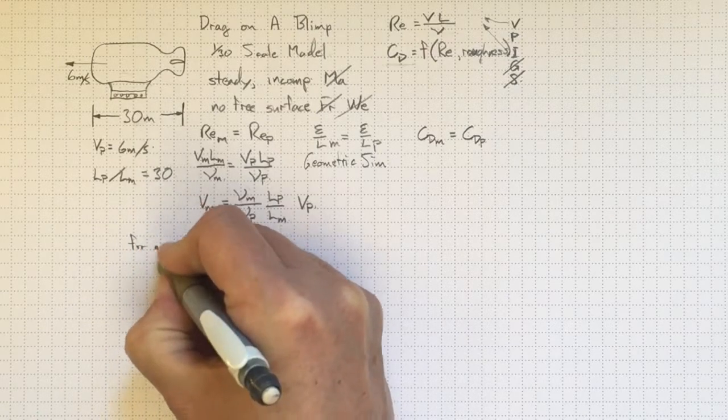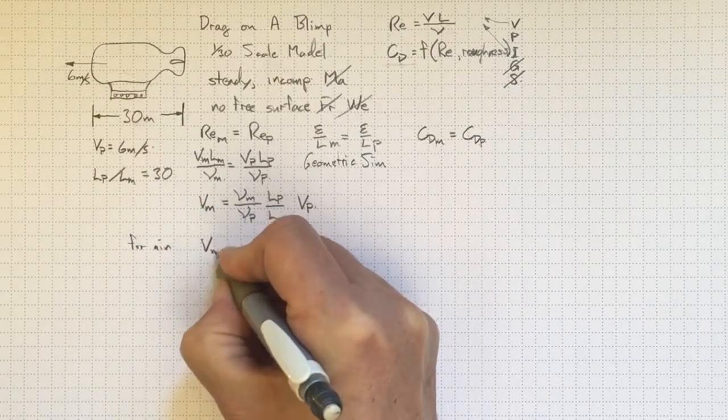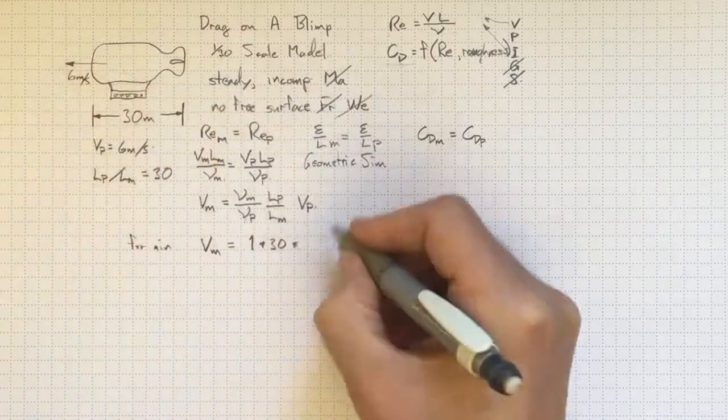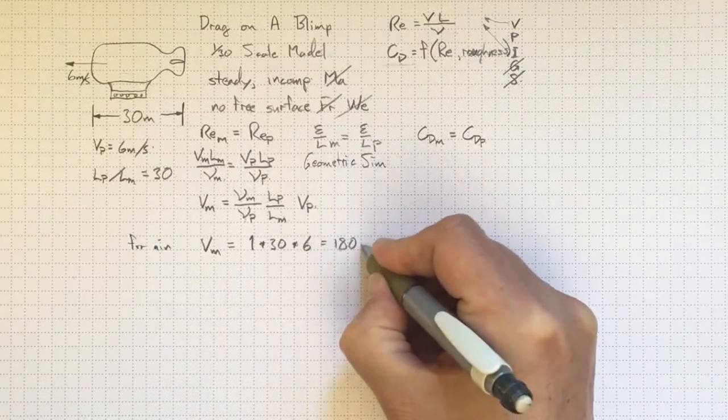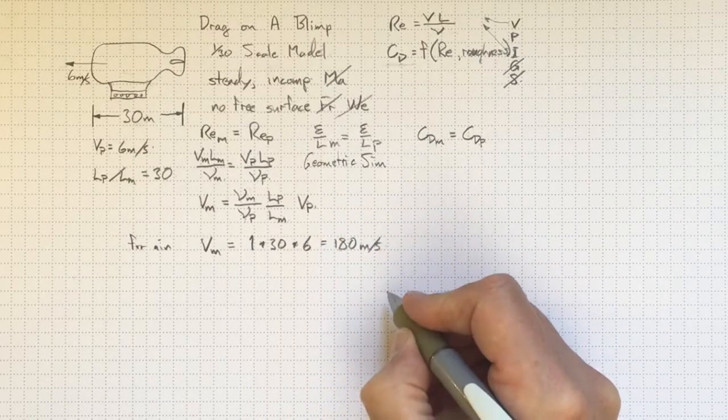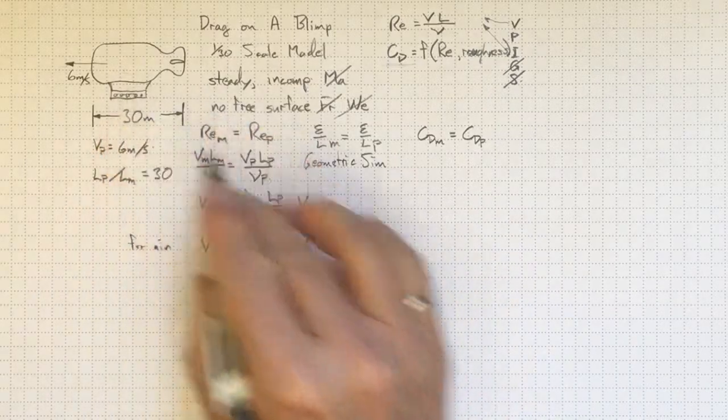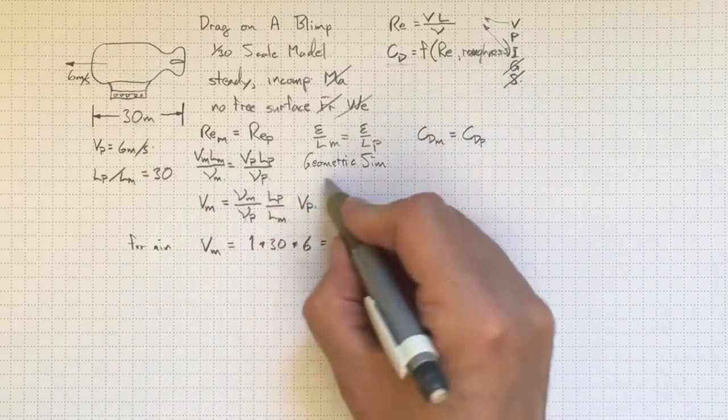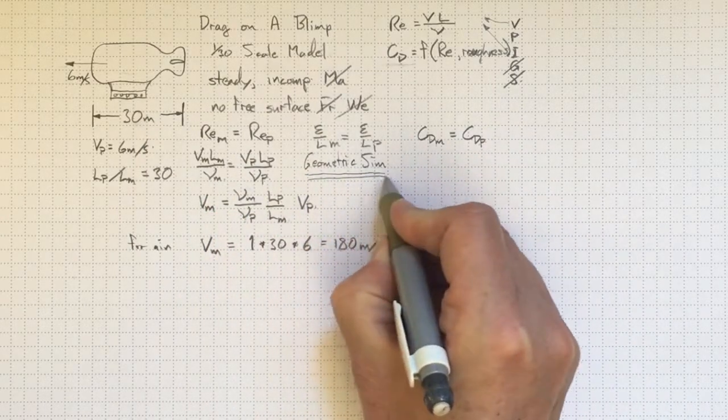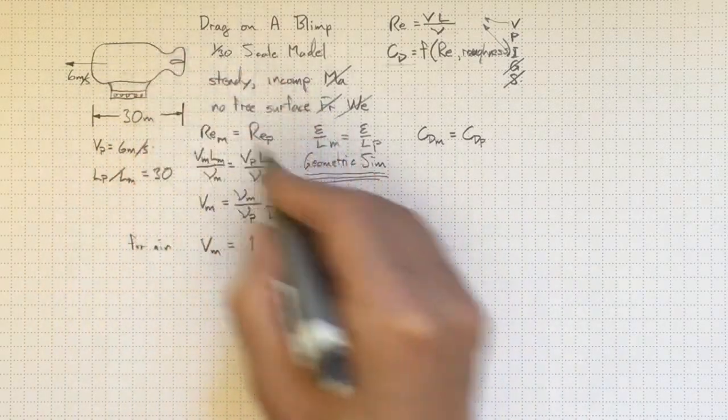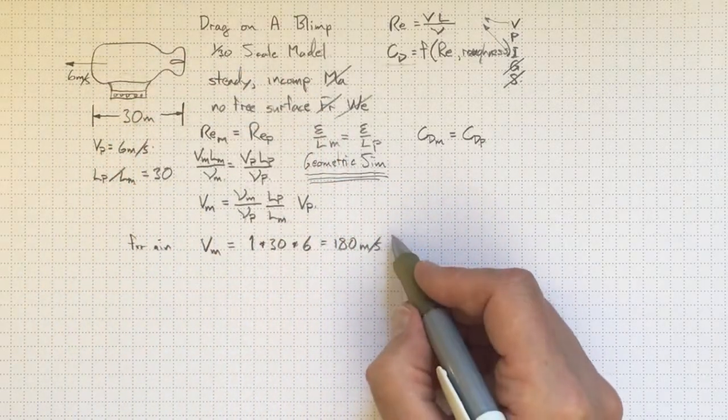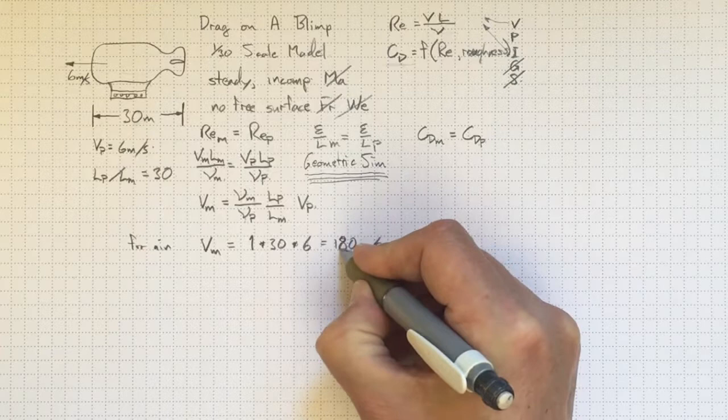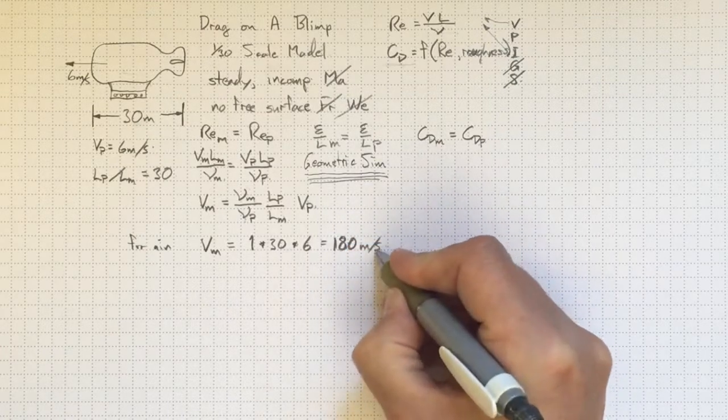So, for a test in air, the model velocity would have to be equal to 1 times 30 times 6, which is 180 meters per second. And I would be able to get the same behavior around my small model as I had around the really large one because I'd have the same Reynolds number. And if I had geometric similarity, then I'd have the same ratio of all of the lengths. It would be the same size and shape right down to the roughness height. And I could project my results straight back again as long as all of my approximations held up.